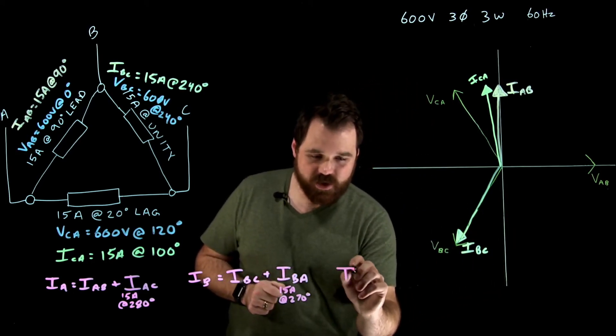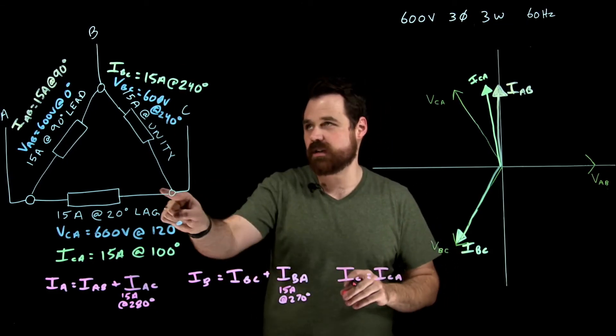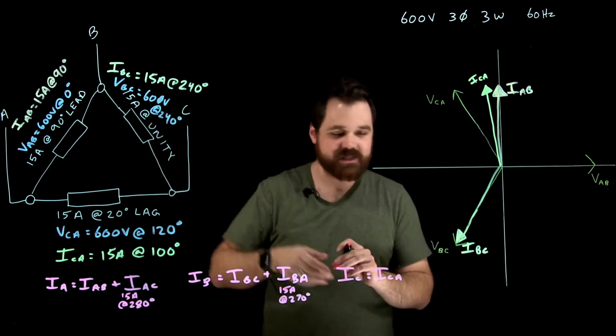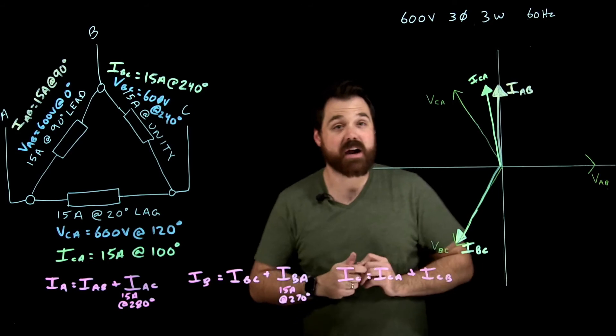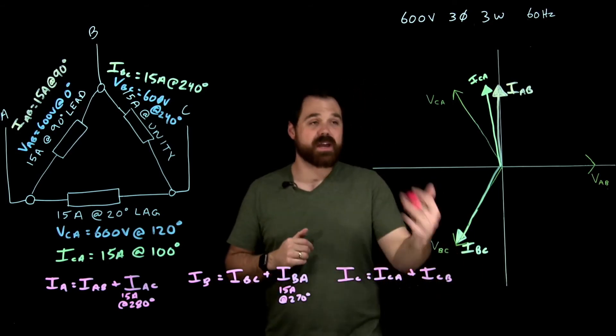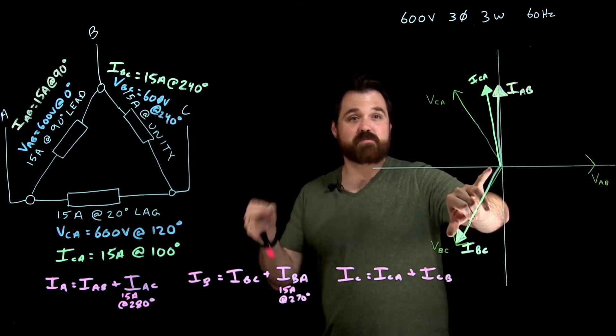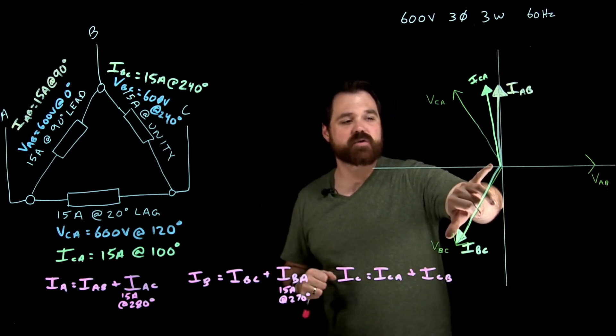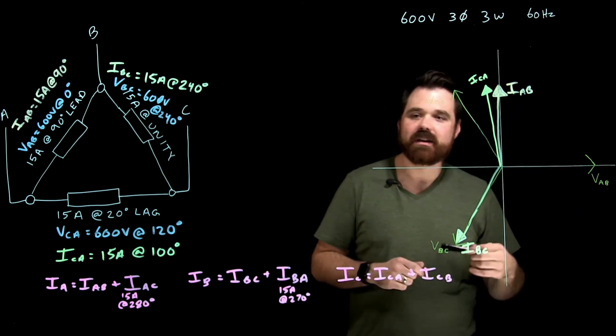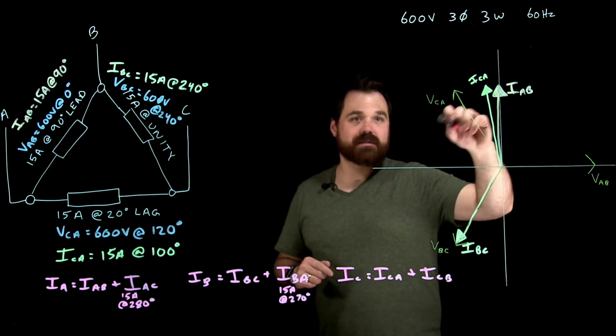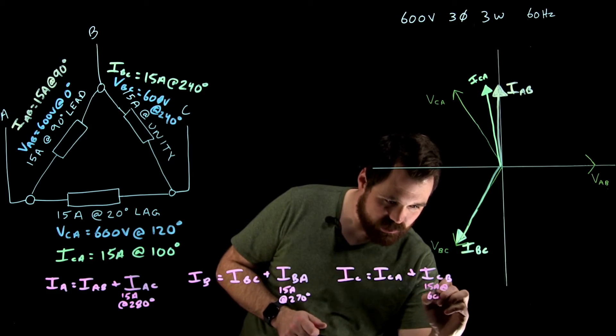We do the same thing for IC equals IC to A, comes in, here's IC to A, plus IC to B, which we are going to have to do the math for that. So again, IC to B we don't have right now, but we do have IB to C. And IB to C is at 240, which means IC to B is the exact opposite. So we will be minus 180, and it would be at 60 degrees. So this is 15 amps at 60 degrees.